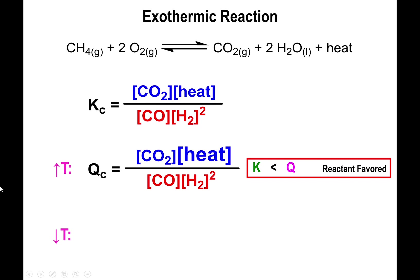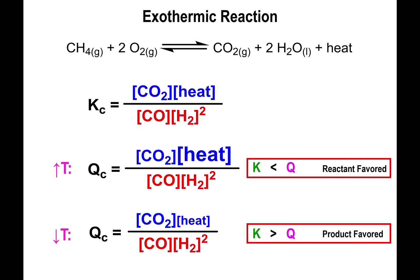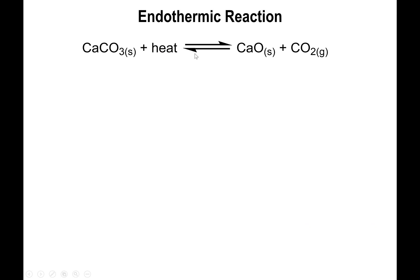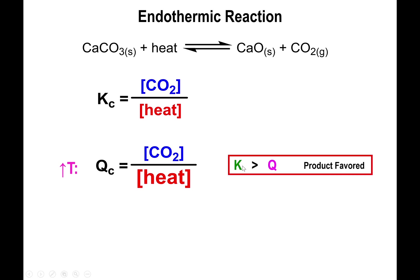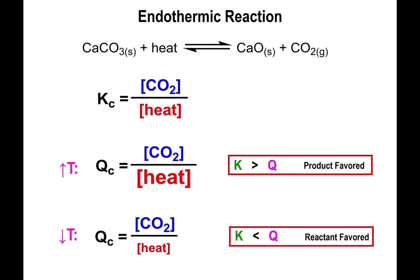If you decrease the temperature for an exothermic reaction, you are removing product (heat), so you shift to the product side. For an endothermic reaction like calcium carbonate turning into calcium oxide and CO₂, heat is on the reactant side. Increasing temperature increases the denominator, making Qc smaller than K, so it shifts to the product side — you're adding reactants, so you move to the opposite side. Decreasing temperature removes reactants, so you move to the reactant side.